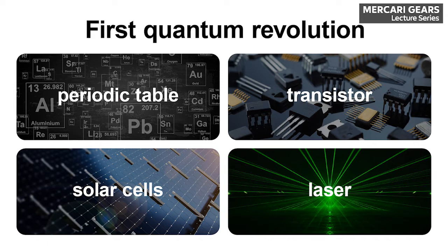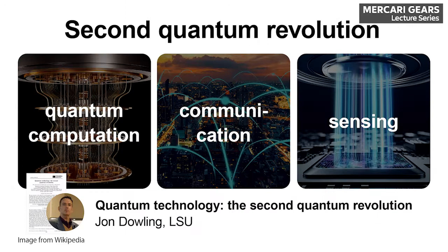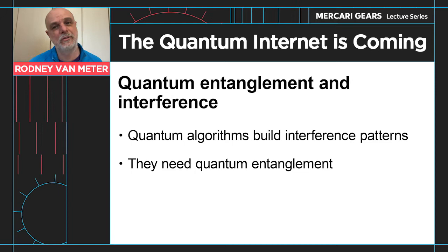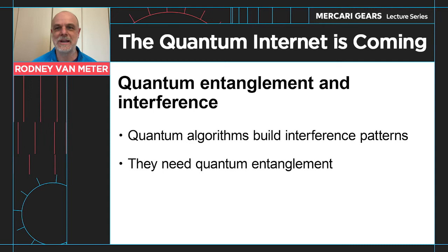We can think of the introduction of the laser, the transistor, the atomic periodic table, and solar cells as the first quantum revolution. A friend of mine, John Dowling, proposed that what we're seeing now with these quantum technologies is actually the second quantum revolution — that's going to bring us quantum computation, quantum communication, and quantum sensing. He proposed that in a paper back in 2003. What we need in order to take advantage of this are two main things: quantum entanglement and quantum interference.